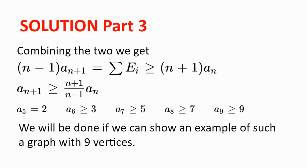Now we know that a_5 is equal to 2, because if we have 5 points, then we just need 2 edges, and there's only one way we can pick those 5 points, and that will guarantee that those 5 points will have 2 edges. Now using this inequality, we get a_6 greater or equal to 3, a_7 greater or equal to 5, a_8 greater or equal to 7, and finally a_9 greater or equal to 9.